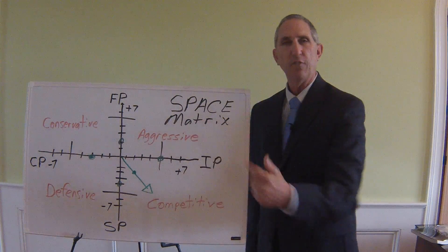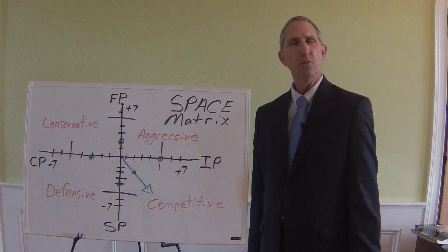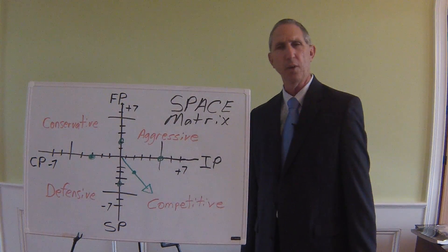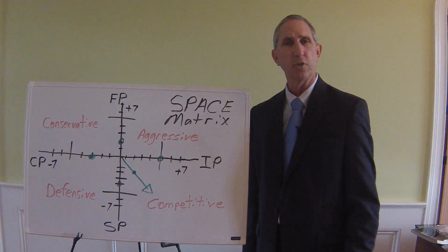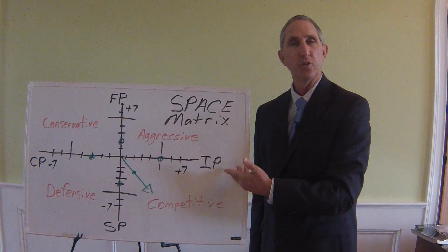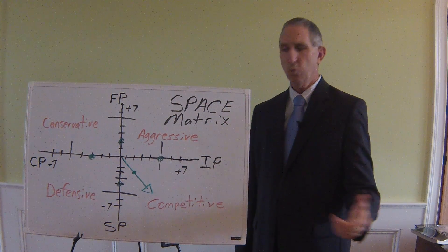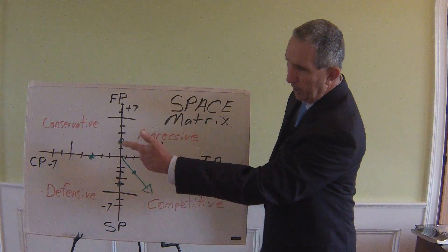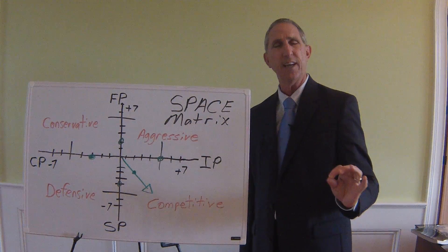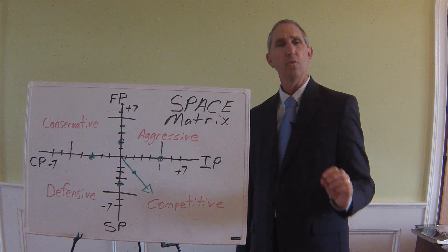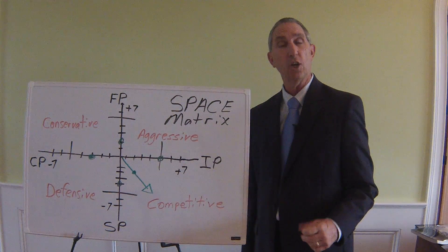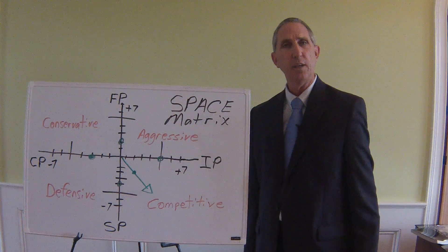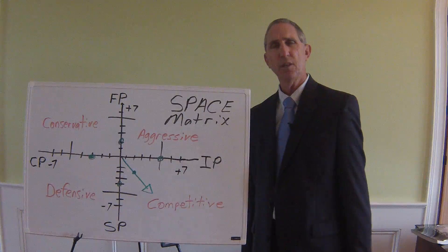For example, financially, on a one to seven scale — seven being wonderful — how strong is your firm? If you use the Excel student template at the strategyclub.com website, which I recommend, it removes the mechanics of formulating these and drawing arrows. The template allows you to enter four or five factors under each dimension. For industry position, you rate the industry your firm competes in on a one to seven scale, seven being wonderful, on things like growth potential and financial position going forward. On competitive position, a negative seven is a bad thing — meaning you're a very weak competitor. You rate your firm on things like product quality, customer loyalty, and employee morale on a one to seven scale.